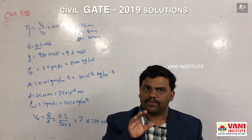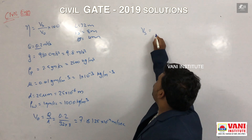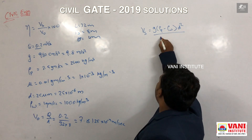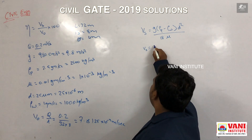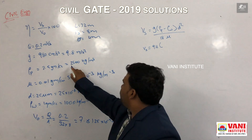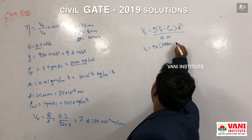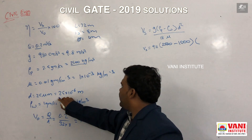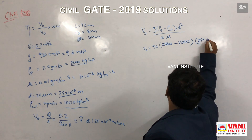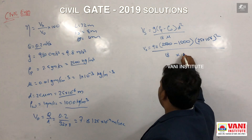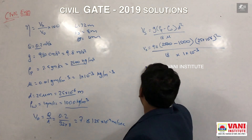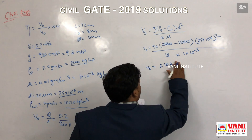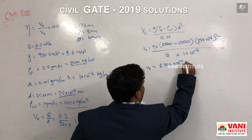Now let us calculate the settling velocity as per Stokes law. Settling velocity is equal to G × (density of particle − density of water) × D² divided by 18μ. So settling velocity equals 9.8 × (2500 − 1000) × (25 × 10⁻⁶)² divided by 18 × (1 × 10⁻³). Calculating this gives a settling velocity value equal to 5.104 × 10⁻⁴ meters per second.